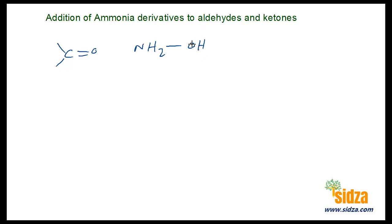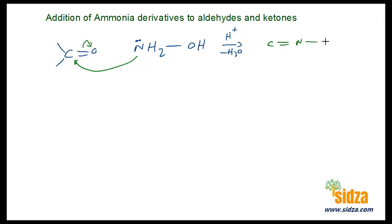From hydroxylamine reacting with an aldehyde or ketone in acidic medium, the nucleophile attacks the carbon, water is lost, and the final product is a C=N bond with an OH group attached to nitrogen. This product — C=N-OH — is called an oxime. So from hydroxylamine you get an oxime.